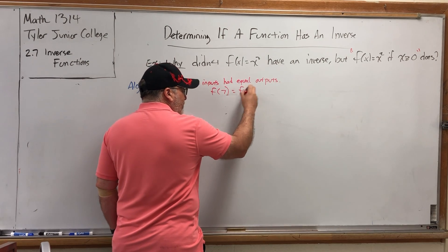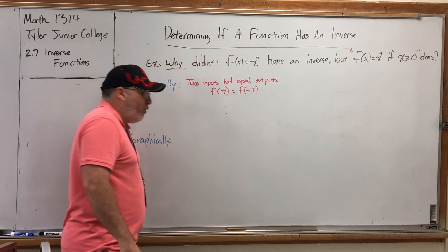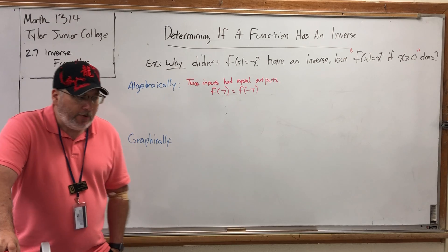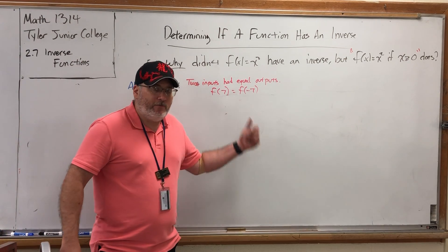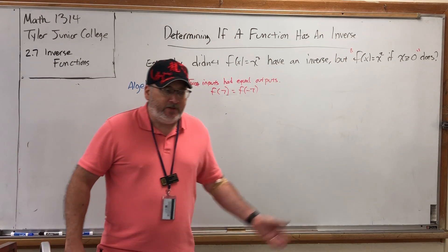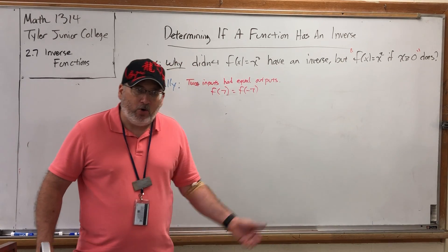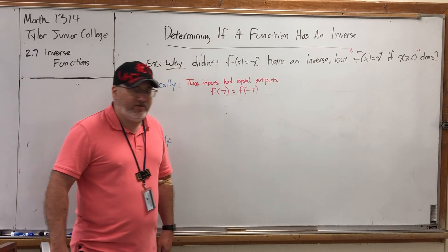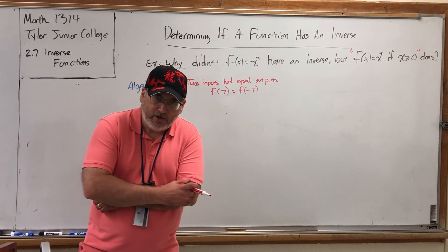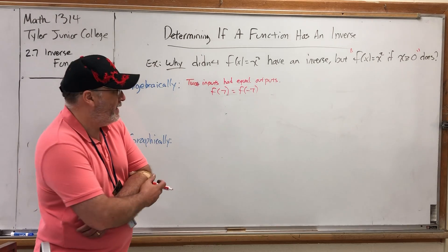The example that I used was 7. Putting in 7 was the same as putting in negative 7. Now why is this a problem? Because if both of these numbers turn into the same answer, 49, the inverse function doesn't know what to turn the 49 back into. It can't turn it back into both 7 and negative 7. It's a function. It can only turn 49 into one value at a time.